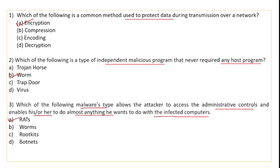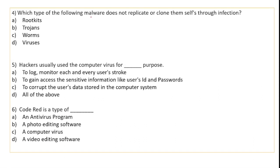Which of the following malware does not replicate or clone itself through infection? It is a malware that doesn't make replications, copies, or clones. The example is Trojan. A Trojan is malware that works for the purpose it has been coded and programmed for — they do not make copies of themselves.